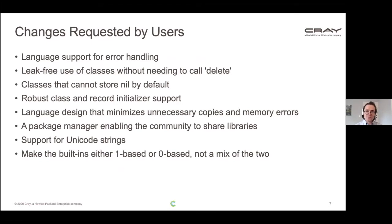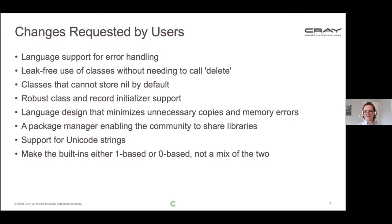So what are the changes requested by our users? The first one is language support for error handling — some languages do this with exceptions. Second is having a way to use classes without needing to call delete and without having everything leak memory. Next, a request that classes can't store nil by default. Robust class and record initializer support. A language design that minimizes unnecessary copies and memory errors. A package manager that enables the community to share libraries. Support for Unicode strings. And making built-in types and variables either zero-based or one-based, not a mix of the two.